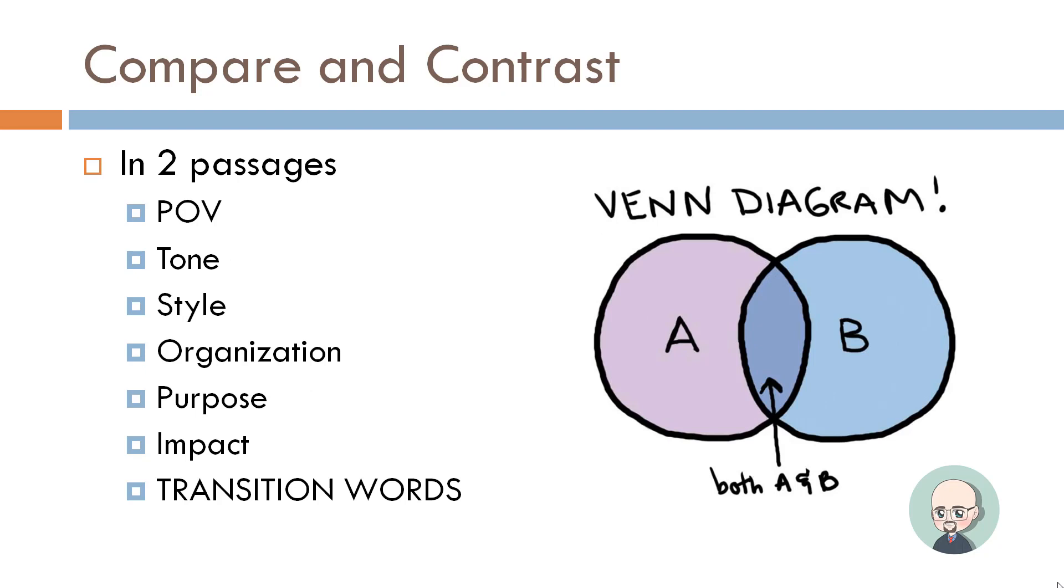The literary techniques and such that are used in these passages will be important. The point of view, which we've discussed. The tone, which we've also discussed. The style, how it's written. This all builds on things we learned in Domain 1, so if you haven't watched Domain 1, I would recommend doing so. Organization, or how the passage is constructed to get a point across. Purpose. Impact, which we've talked about.